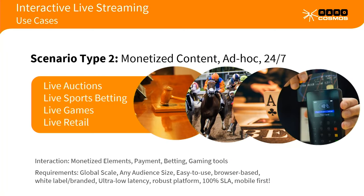Scenario type two is a bit different — it's about monetized content, more like ad hoc or instant streaming for 24/7 operations. Use cases include live auctions, live sports betting, live games, or live retail where you directly monetize your video content for the audience. Here it's very important to keep real-time interaction active and enable the business case around the video stream.